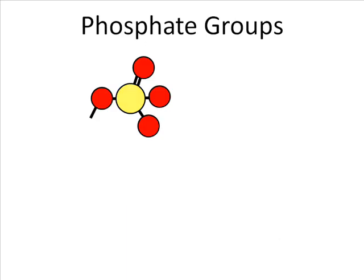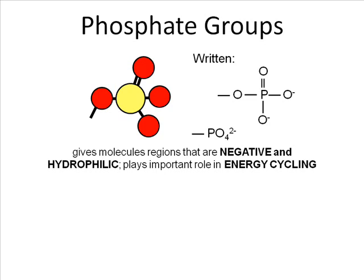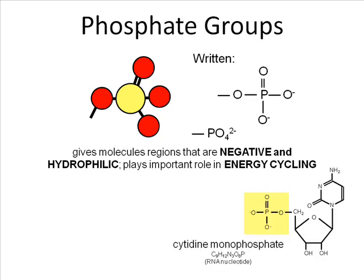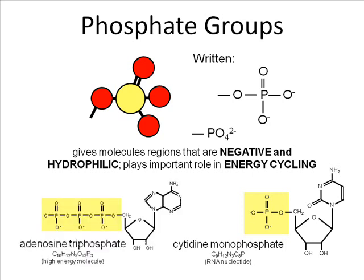Phosphate groups consist of an oxygen covalently bound to a phosphate, which is covalently bound to another set of three oxygens, one with a double bond. Notice two of the oxygens carry full negative charges — not partial charges. The phosphate group has a negative charge, so it makes molecules negative and hydrophilic, and it plays an important role in energy cycling. You may recognize this phosphate from ATP and ADP. Here's cytidine monophosphate with a large phosphate group, and here's adenosine triphosphate (ATP) with three phosphate groups in a row.